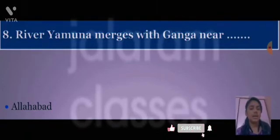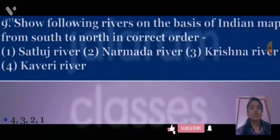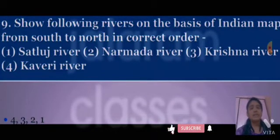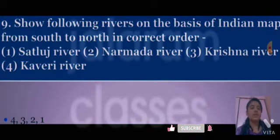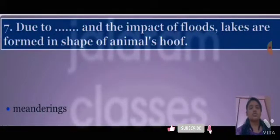River Yamuna merges with the Ganga near Allahabad. Next: arrange the following rivers on the basis of the India map from south to north in correct order. The correct order is: first Kaveri River, second Krishna River, third Narmada River, and fourth Satlunj River.